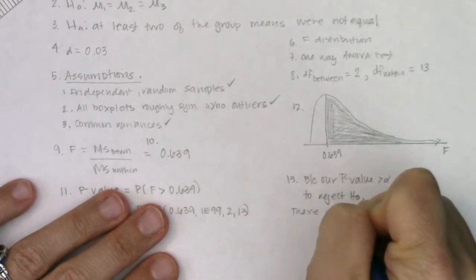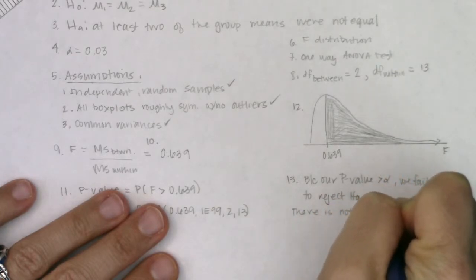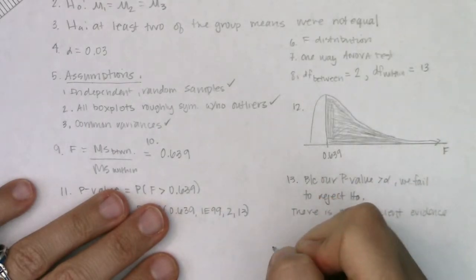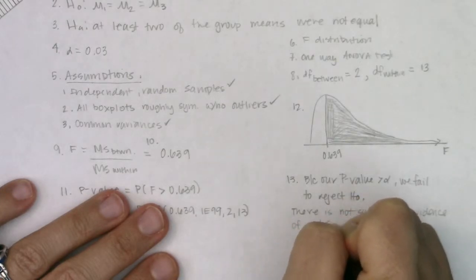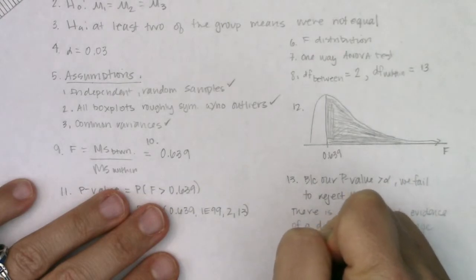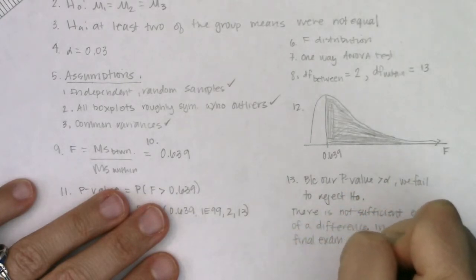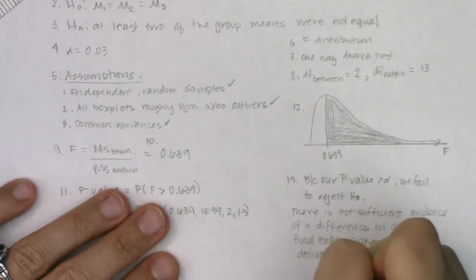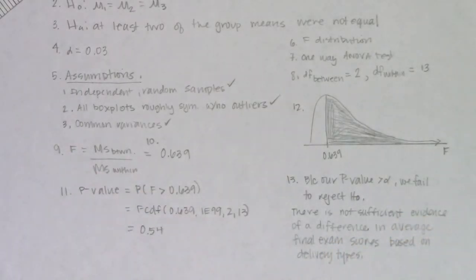So there is not sufficient evidence of a difference in average final exam scores based on delivery types. Okay, so that's good news if you're taking an online class. We're saying, hey, it's no better or worse if you take an online or a face-to-face or a hybrid in terms of how you're going to do.